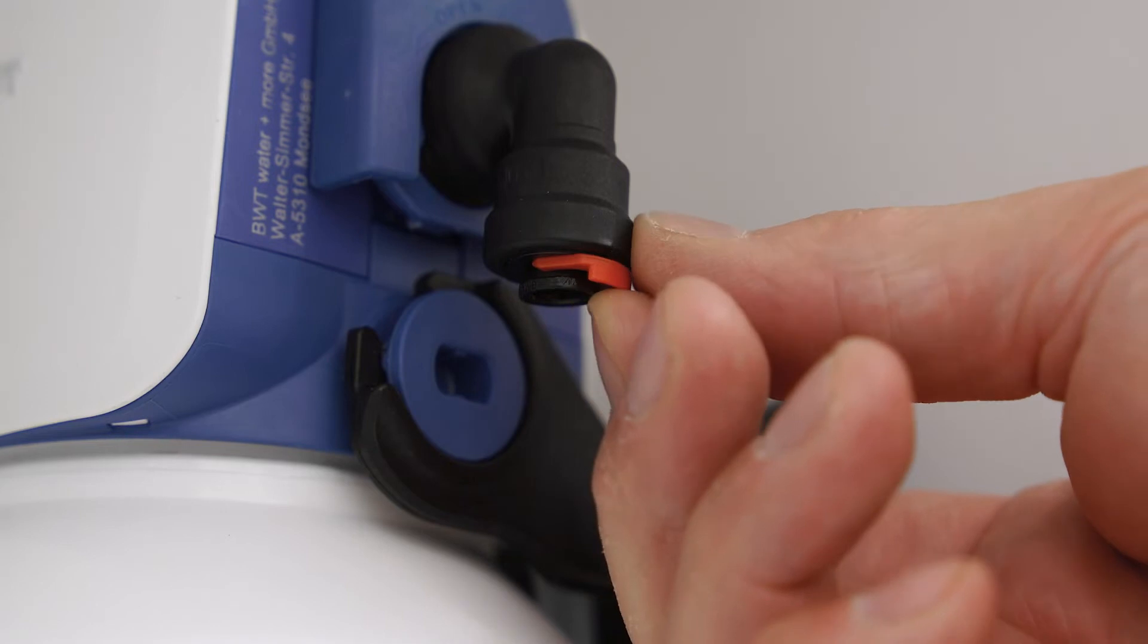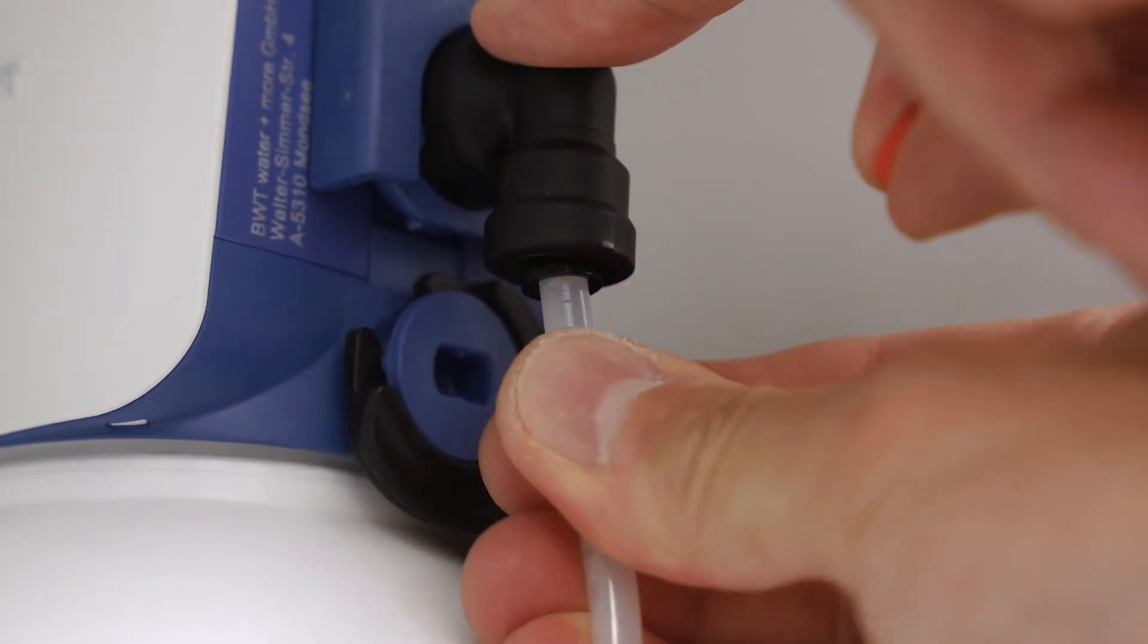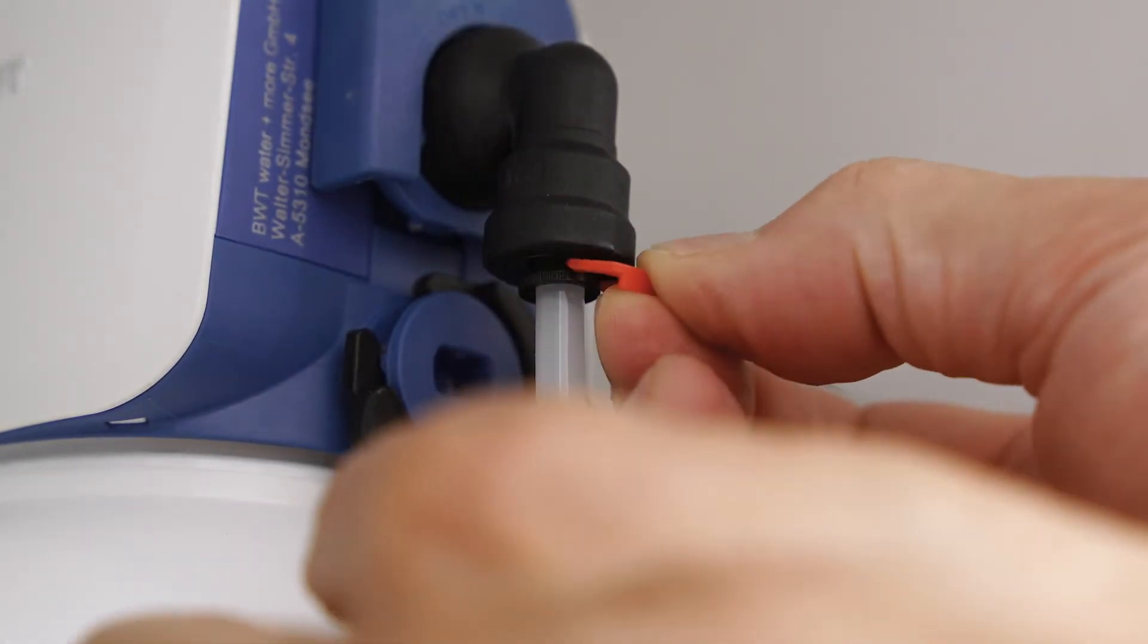Remove the red safety clip at the push-in elbow and insert the autoclave connection hose. Remember to remount the red safety clip at the push-in elbow.